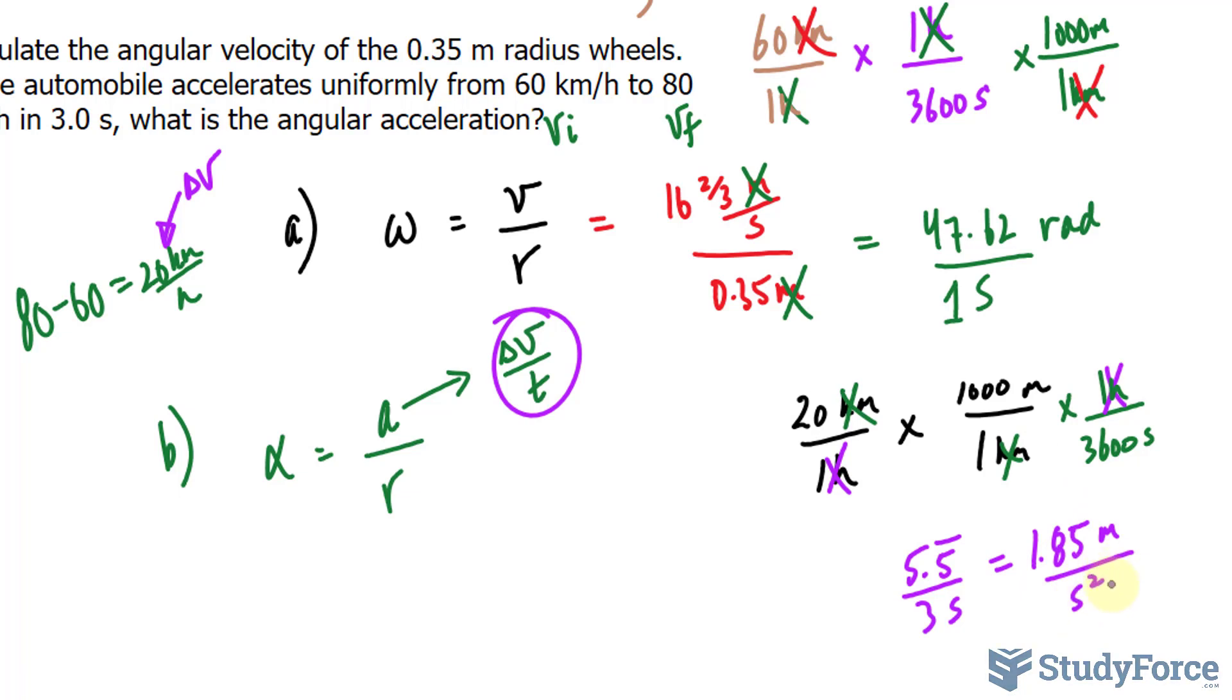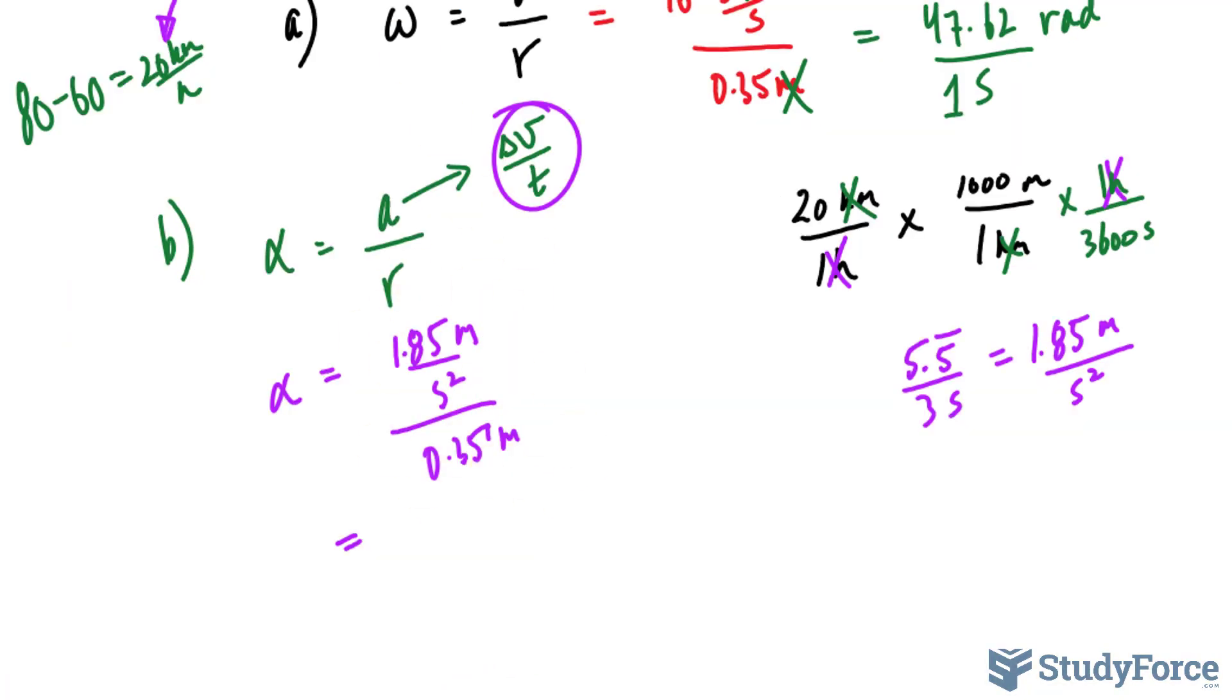Of course, when you divide the units that were in meters per second by seconds, you'll end up with seconds squared at the bottom. We take this value now, 1.85 meters per second squared, and divide it by the radius being 0.35 meters. Dividing this out should cancel out the meters units, leaving you with radians per second squared, or simply per second squared.